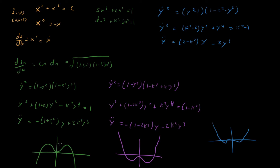So those are the key interpretations of sn, cn, and dn from their differential equations. There's a very nice mechanics interpretation for all three in terms of quartic-type oscillator problems.